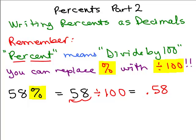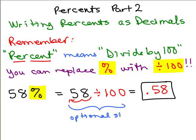So 58 percent is the same thing as 0.58. It means 58 hundredths, 58 out of 100. Now you don't need to do this middle step right here. This is an optional step to write, but that's just showing the meaning.